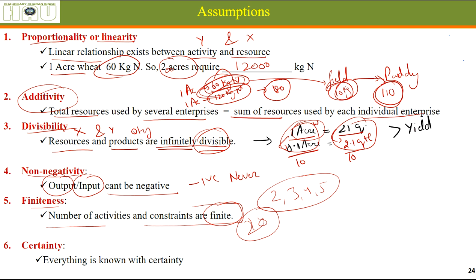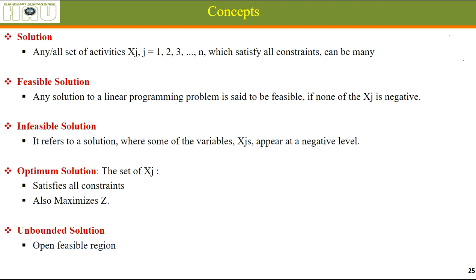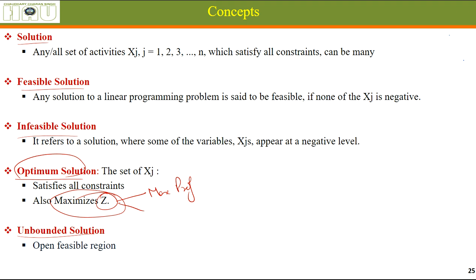The sixth assumption is Certainty: everything should be known with certainty — the requirements, yields, input quantities, output quantities. There should not be any ambiguity. These concepts will be discussed later with a problem. We will discuss a problem and then look at what is the feasible, infeasible, optimal, and unbounded solution. Remember: optimal means the best possible solution that maximizes our objective function — used for maximizing profits or minimizing cost.